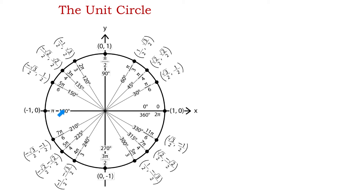The unit circle chart has a horizontal axis called the x-axis and a vertical axis called the y-axis. The unit circle is a circle with the center at the origin of the rectangular coordinate system, and the radius of this circle is 1. This means that the distance from the center to any point on the circle is equal to 1. The x and y-axis splits the entire plane into 4 quadrants.